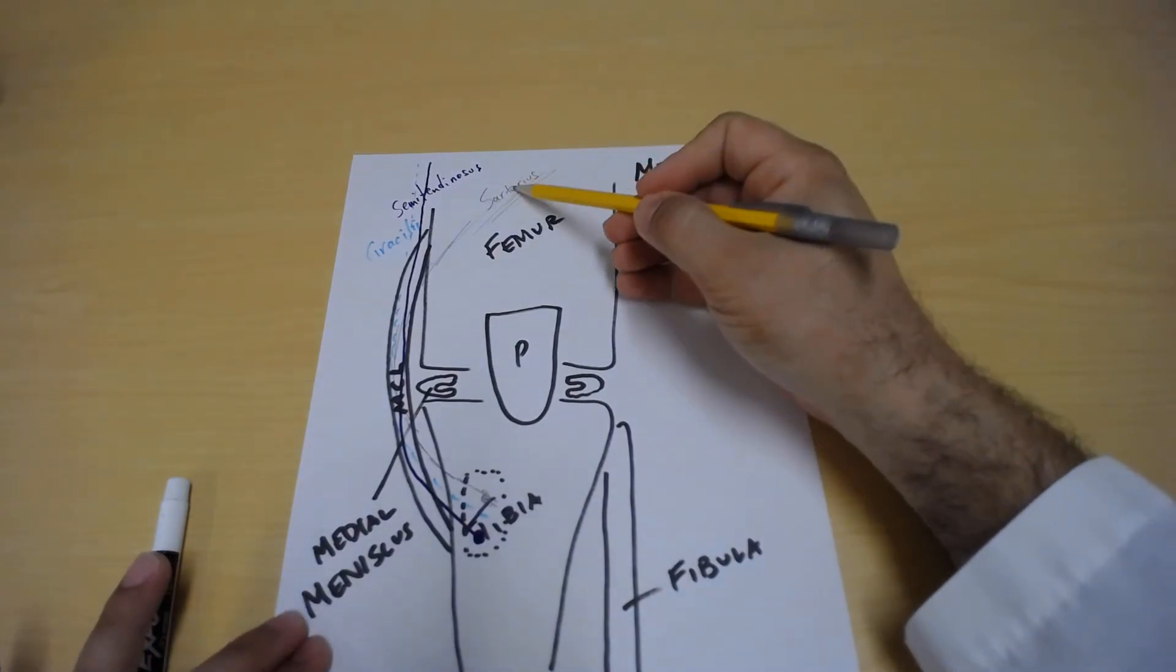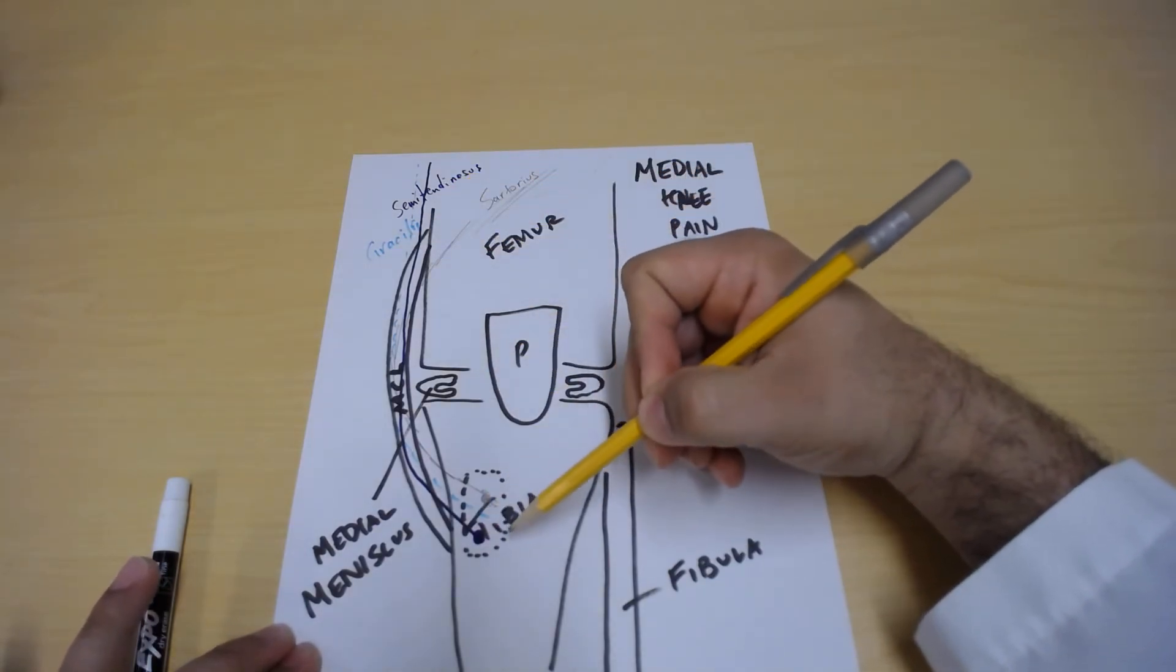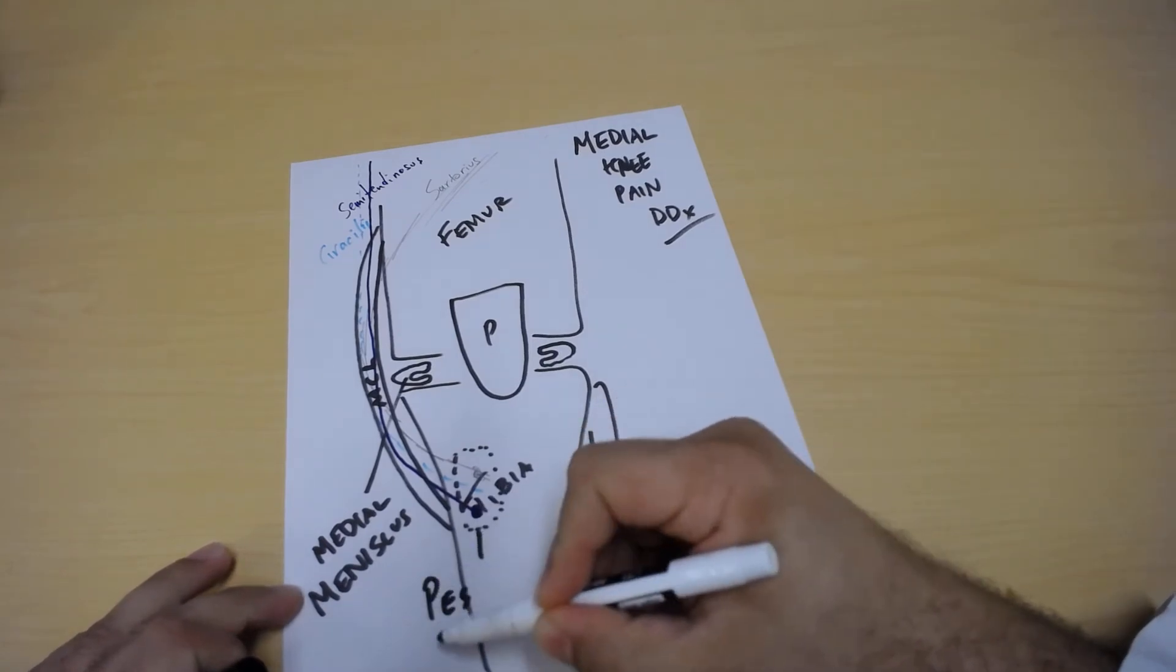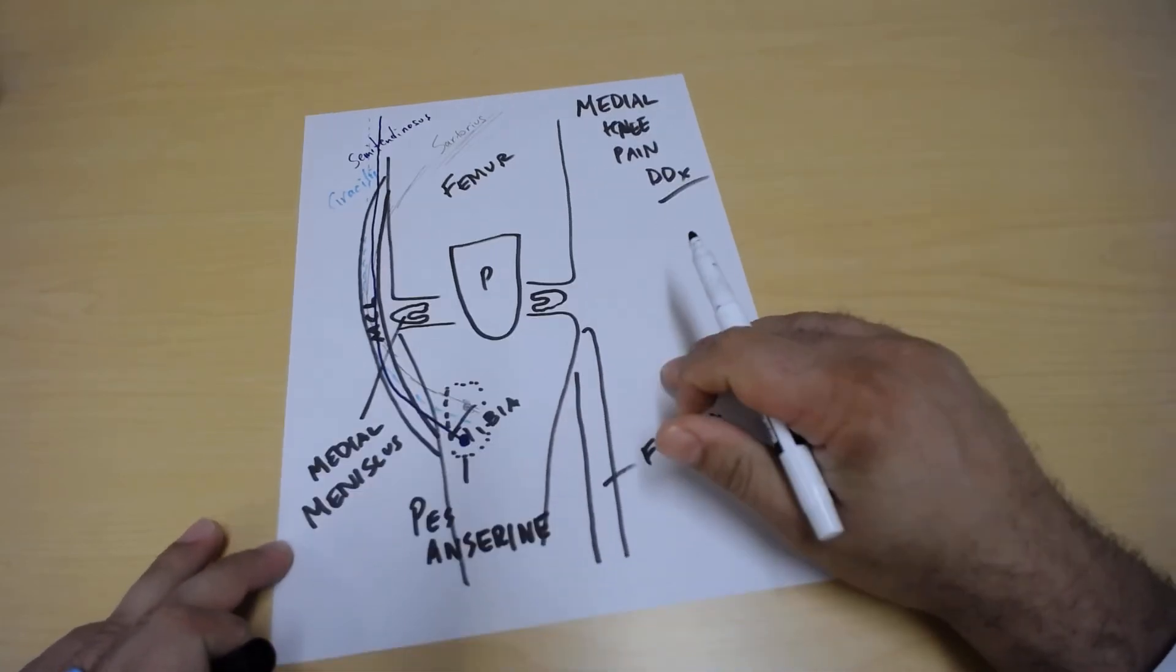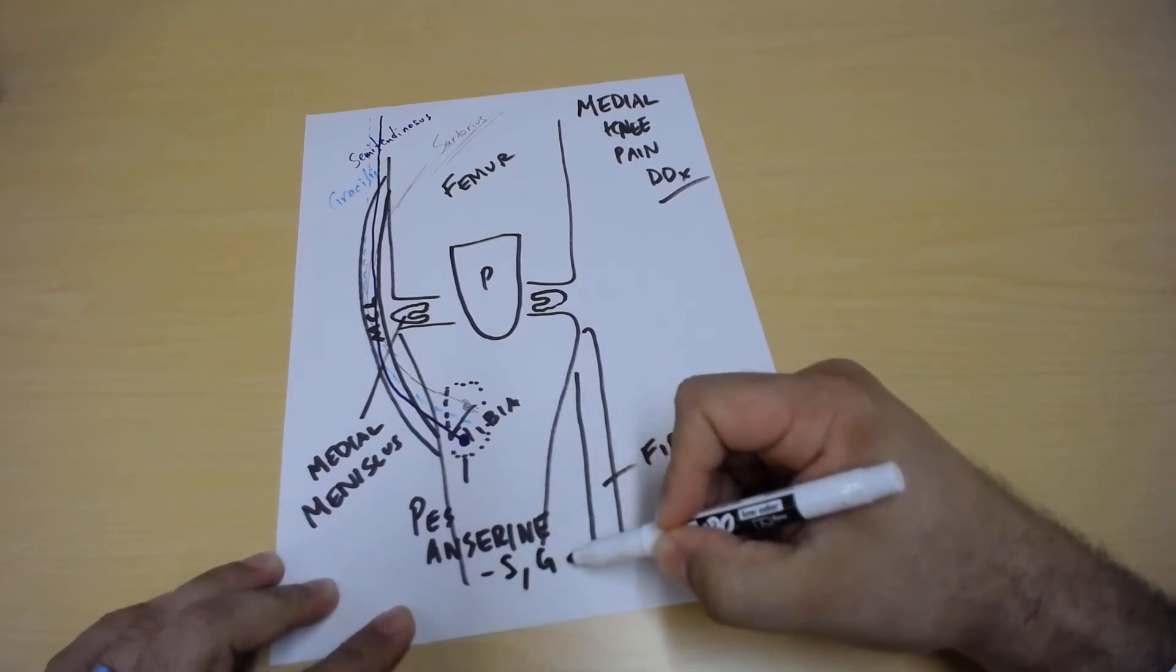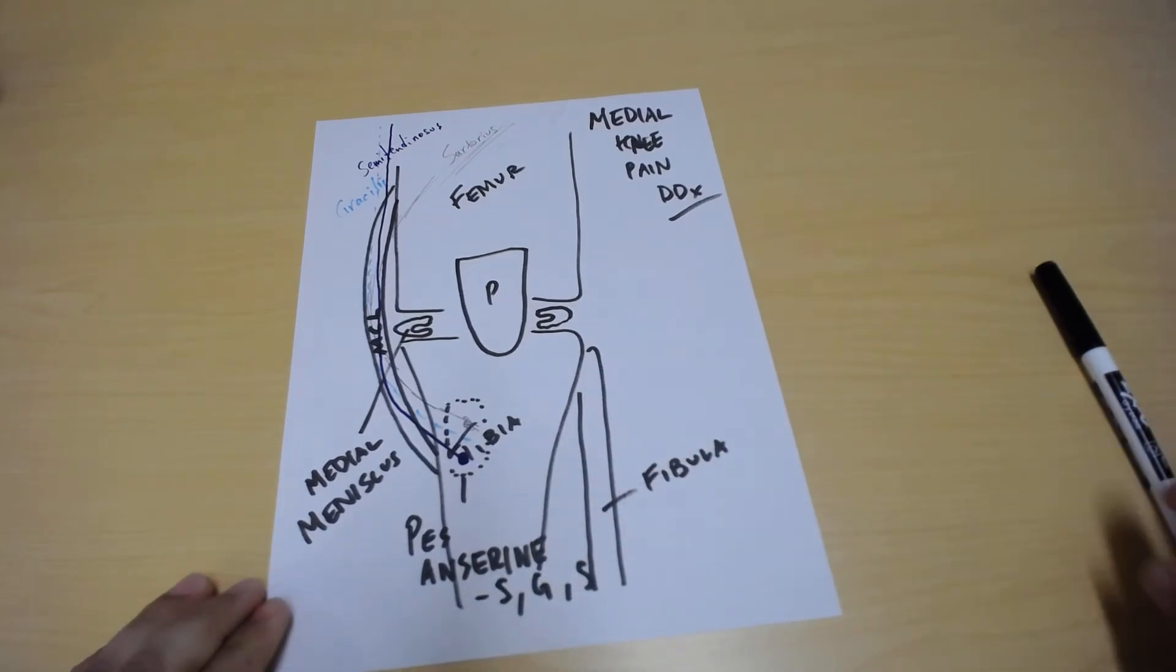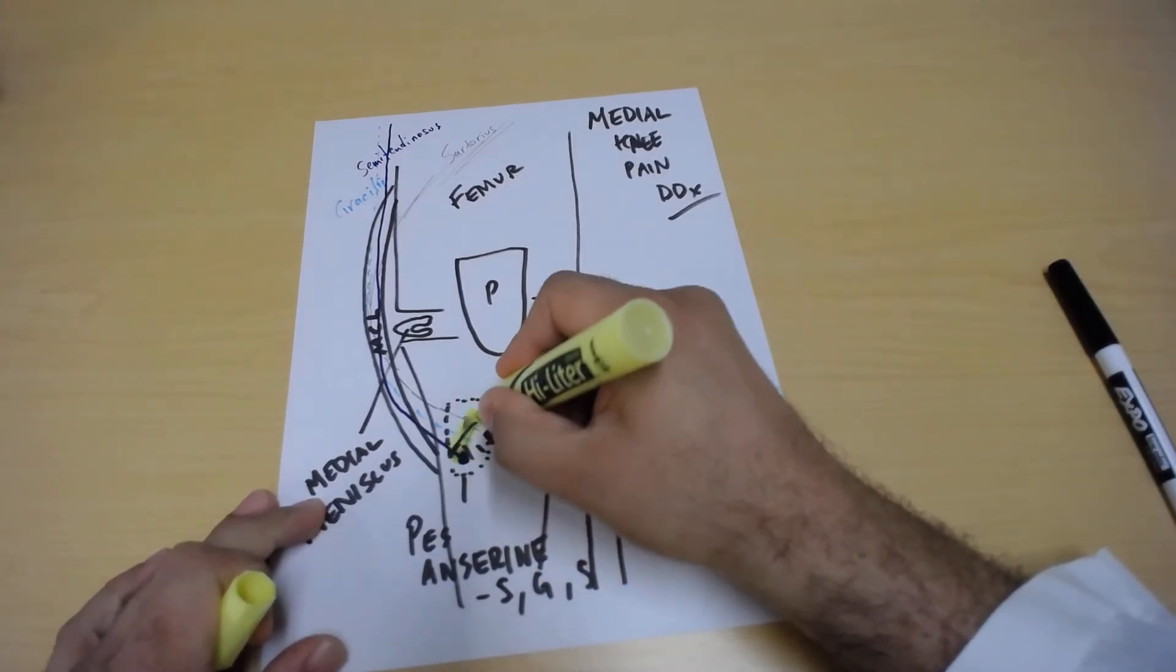These together, the sartorius, the semimembranosus, and the gracilis, as they all come down and attach together in this area, we call this the pes anserine. Now the pes anserine, remember is made up of the semi tendinosis, the gracilis, and the sartorius. Now just adjacent to these structures is a little cushion or pad, you can call it a sack. It's called a bursa. That bursa sits right adjacent to them.